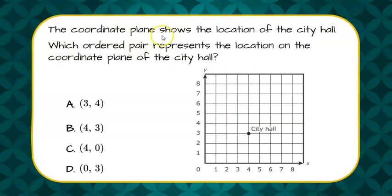The coordinate plane shows the location of the City Hall. Which ordered pair represents the location on the coordinate plane of the City Hall?